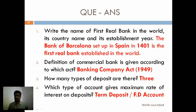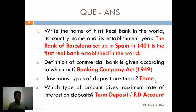Question 2 was: the definition of commercial bank is given according to which act? The answer is the Banking Company Act, 1949. Question 3 was: how many types of deposits are there? There are basically three types — first, current account deposit; second, savings account deposit; and third, fixed deposit or term deposit.